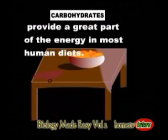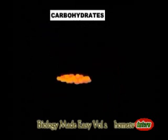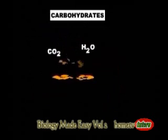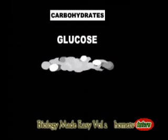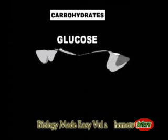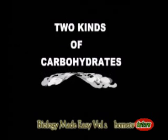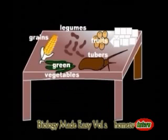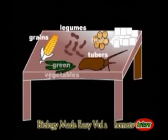All these vitamins are found mostly in yellow fruits, vegetables, eggs, fish, margarine, milk, yeast, and liver. Carbohydrates provide a great part of the energy in most human diets. They are burned during metabolism to produce energy, liberating carbon dioxide and water. Carbohydrates are used by the cells in the form of glucose, the body's main fuel. The two kinds of carbohydrates are starches and sugars — starches are found mainly in grains, legumes, and tubers, while sugars are found in plants such as vegetables and fruits.